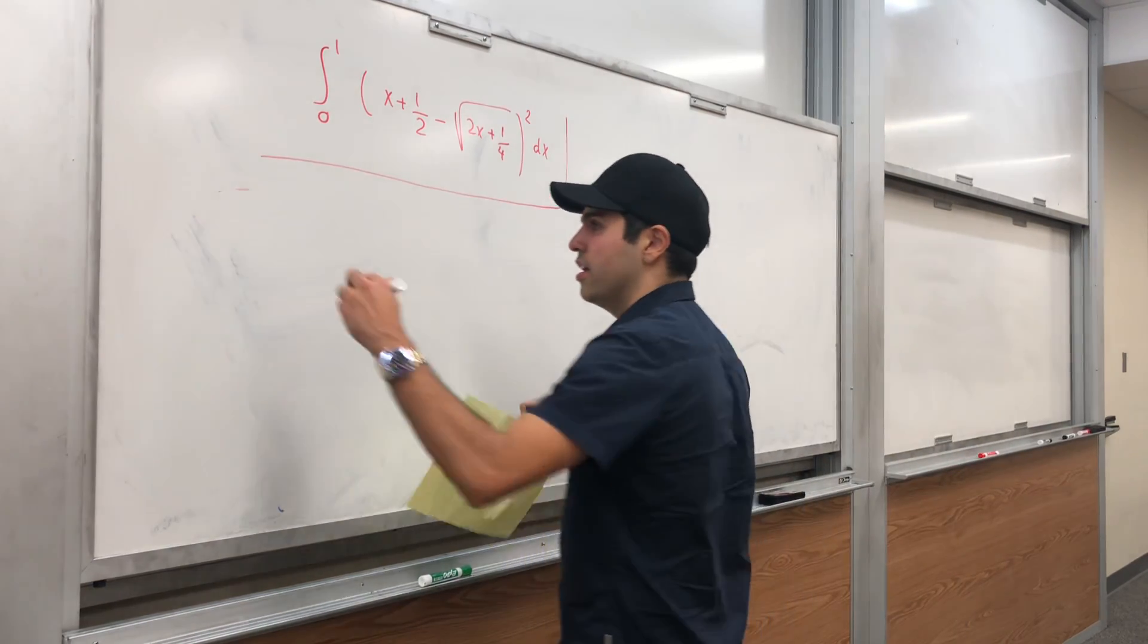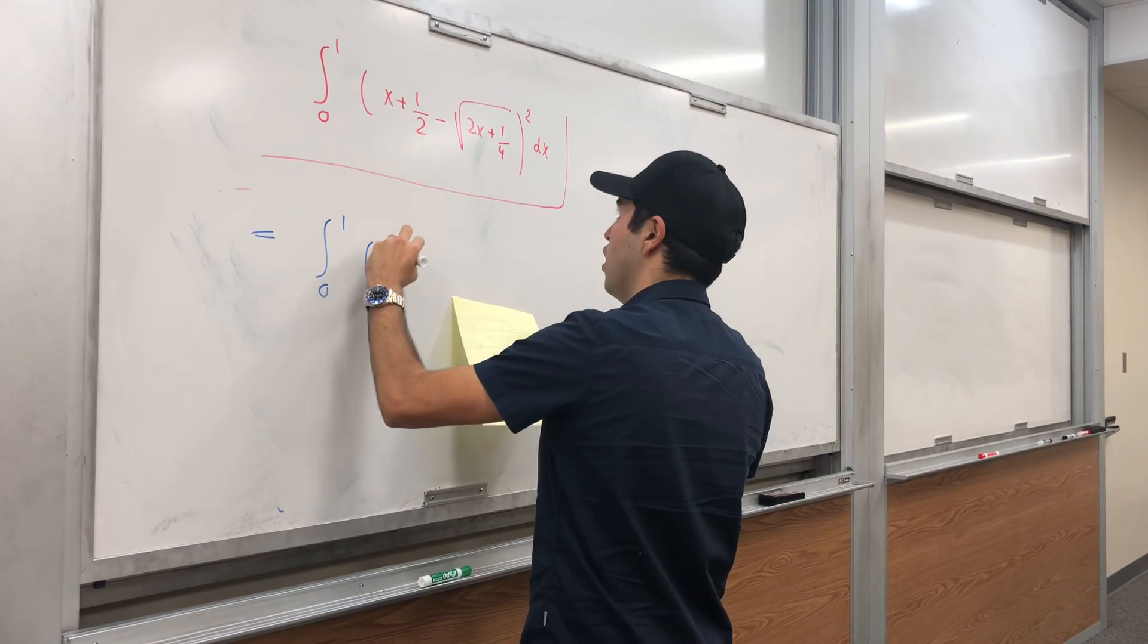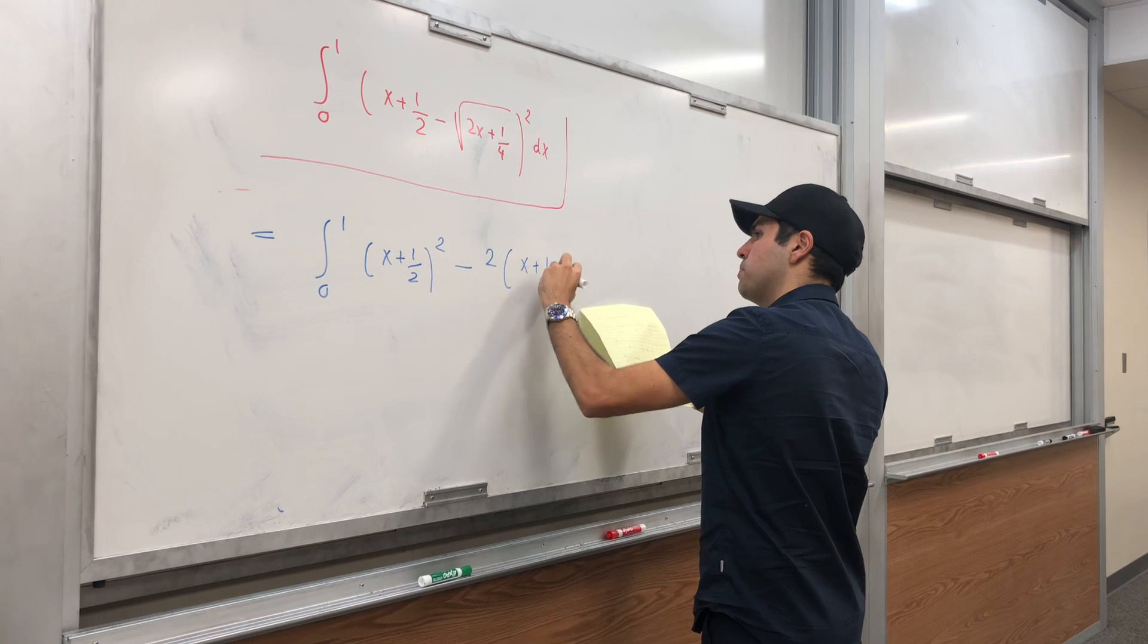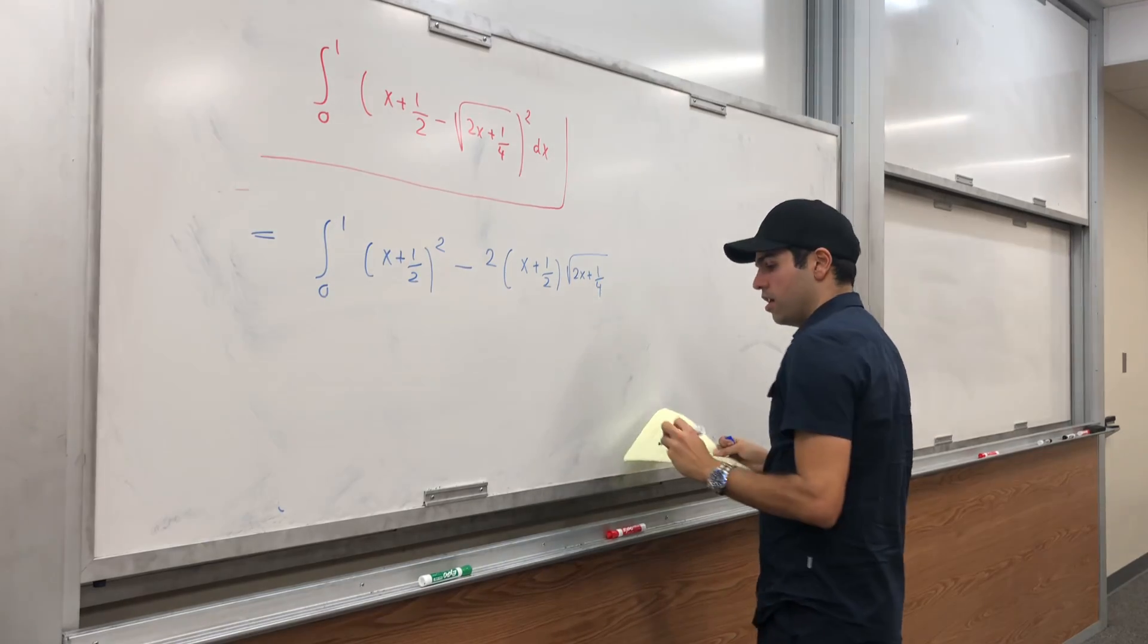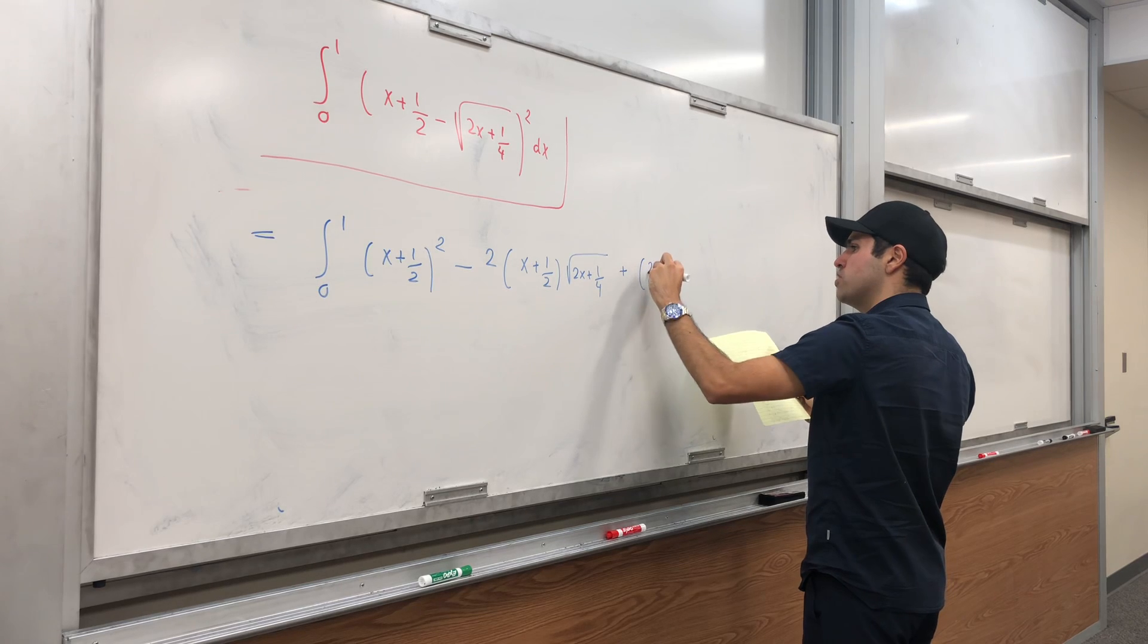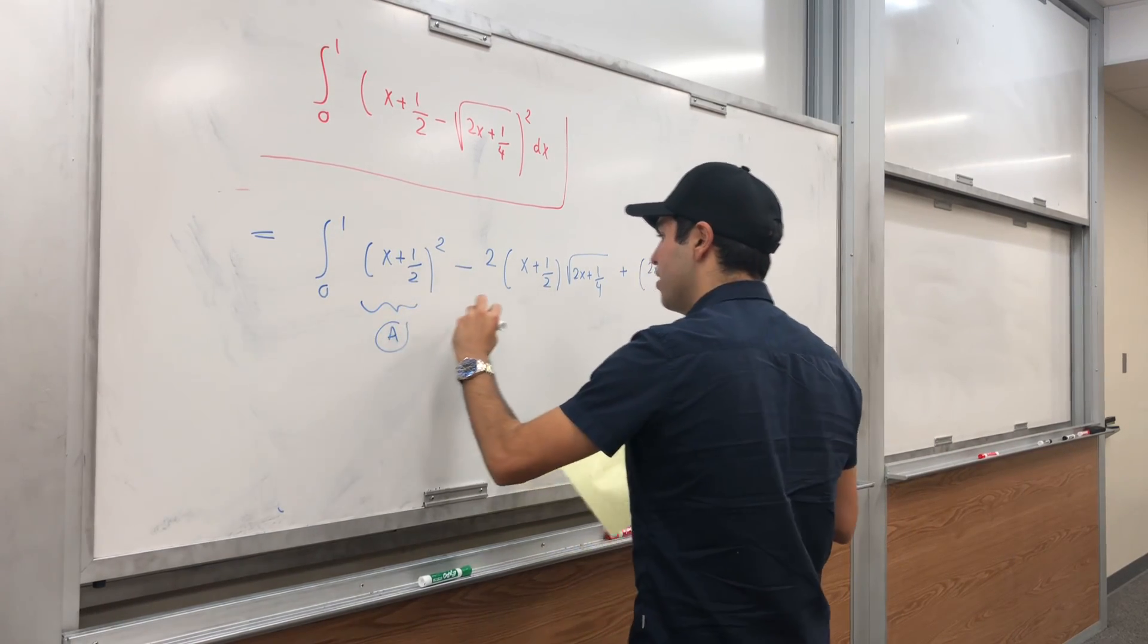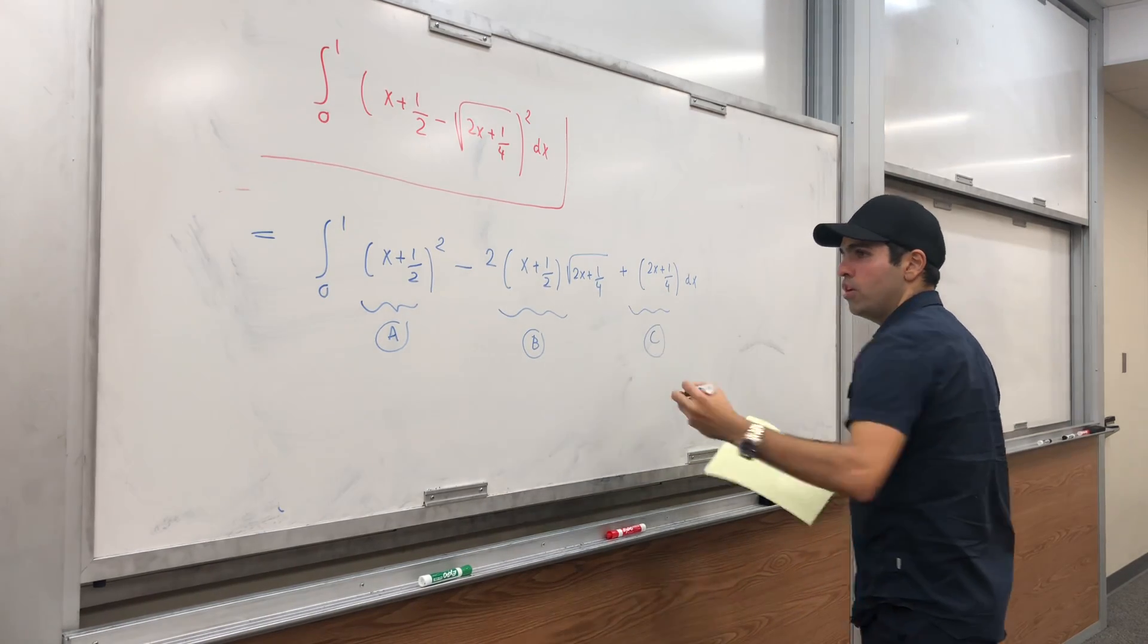Notice this is really equal to the integral from 0 to 1 of (x + 1/2)² minus 2 times (x + 1/2) times √(2x + 1/4) plus the integral of (2x + 1/4) dx. And so we get three pieces: A, B, and C. Let's evaluate them.